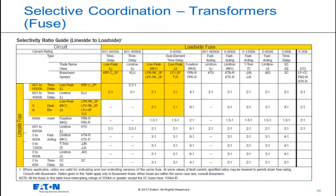This is the FUSE Selectivity Ratio Table. Across the top are the load side fuses, and down the left-hand side are the line side or upstream fuses. If I select any two pairs, in this case a load side fuse of a TCF or an LPJ, and a line side fuse of an LPN.